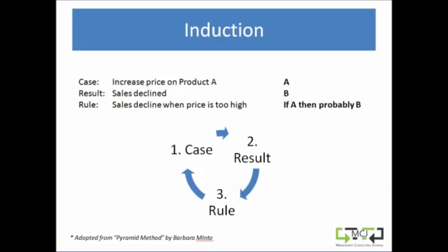Let's look at an example. The case could be that you increase the price on product A, and then you see the result is that the sales declined. Then you form a rule, which is that sales decline when price is too high.